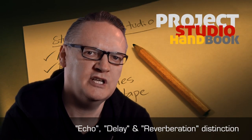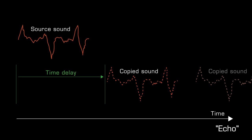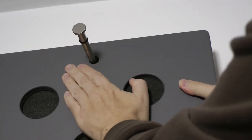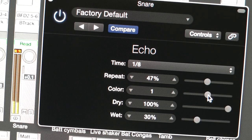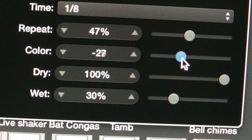Delay and reverberation share common properties but differ subtly. Echo is often defined as individually distinct repeats, separated from the original sound by a gap of at least 50 to 70 milliseconds. They occur naturally in the real world and were first simulated electronically in the studio with tape recorders. In the studio, the term echo refers to a delay line that simulates the behaviour and character of echoes in nature, including the way in which high harmonic frequencies decay faster than low frequencies.